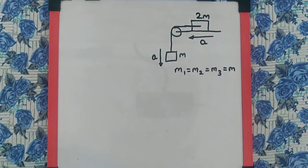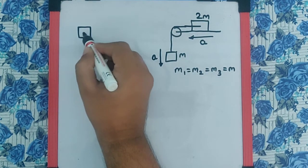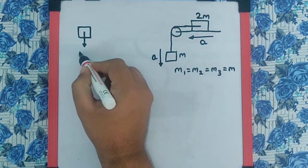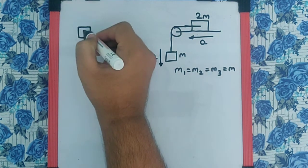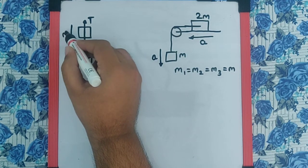Now, if we draw the free body diagram for the body of mass M, we will have Mg acting vertically downwards, tension acting vertically upwards, and there will be motion.